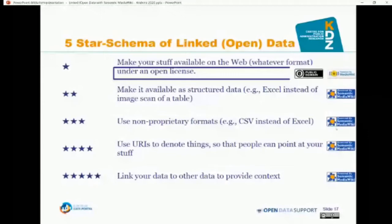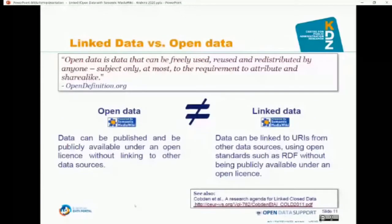What's the difference between linked data and open data? Open data is data that can be freely used, reused, and redistributed by anyone, subject at most to attribution. Open data can be published under an open license without necessarily linking to any other sources — it just means making your information freely available. Linked data means data can link to URIs, but this doesn't necessarily mean it must be open data. You can use linked data internally in your organization; your internal data can link to other vocabularies for internal knowledge graph applications.